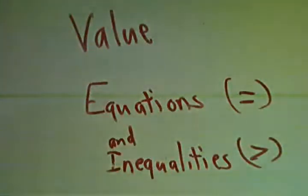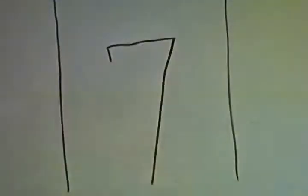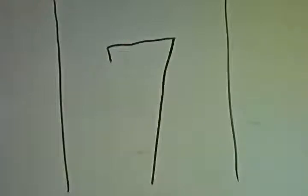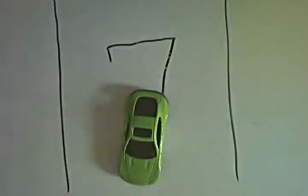When we talk about absolute value, we're talking about numbers or variable terms that are inside these two sets of straight lines. Absolute value really is kind of how a car thinks. A car can only drive one direction, it can drive another direction, but it has no idea how far it's actually gone, so it's a good analogy to start thinking of absolute value as how cars think.